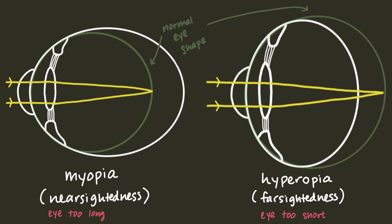In myopia, the eye is too long and the light converges in front of the retina. Conversely, in hyperopia, the eye is too short and light converges behind the retina. Glasses work by bending light so that it converges properly at the retina.